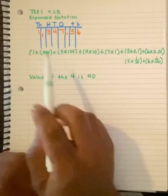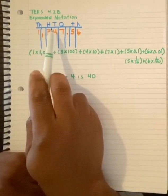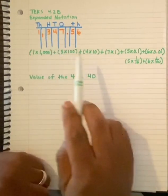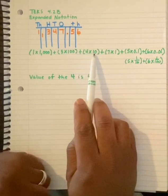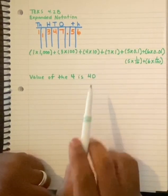I know that because I have four in the tens place. Also, four times ten is 40. So let's try one more.